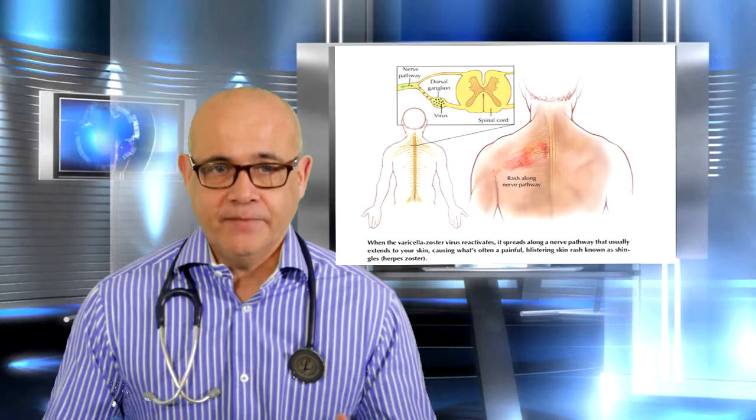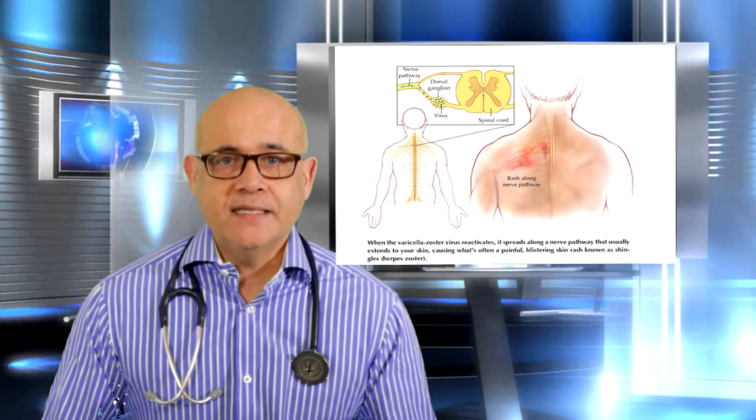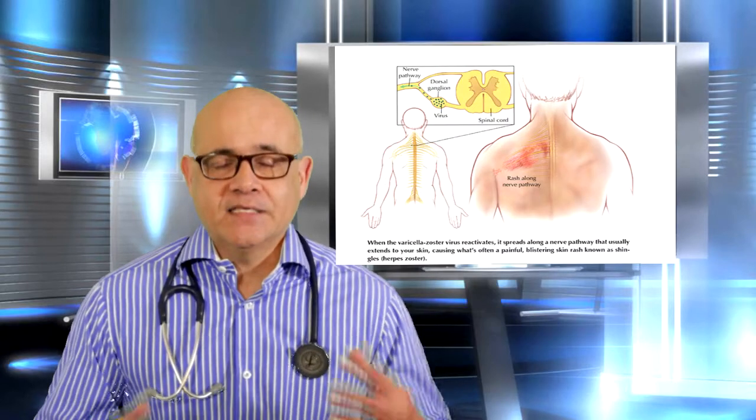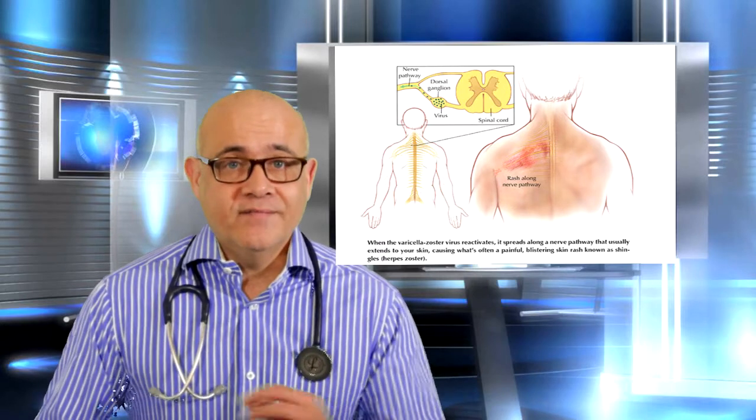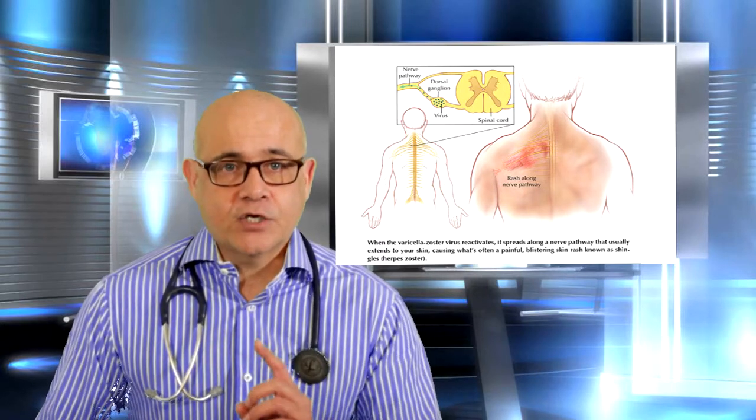Shingles results from reactivation of the latent VZV in neurons within the sensory ganglia. It is characterized by a painful, usually unilateral vesicular eruption that occurs in a restricted dermatomal distribution. I've put up some of these pictures which can show you predominantly where we see it in real life.